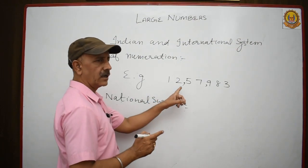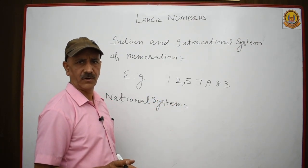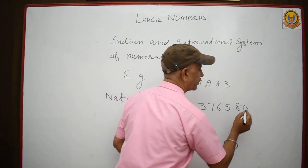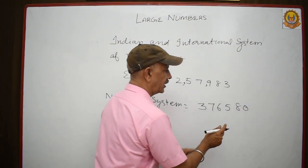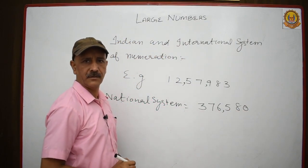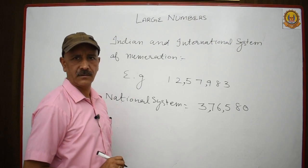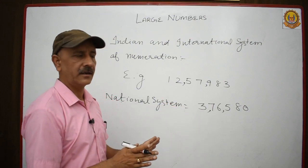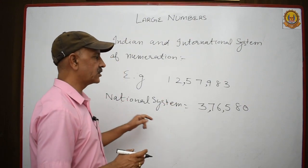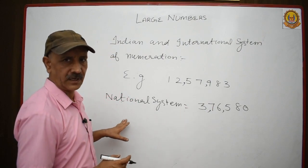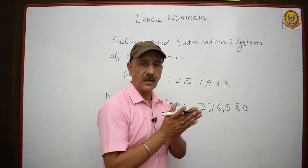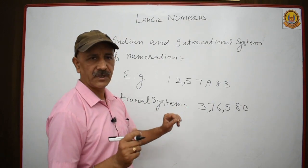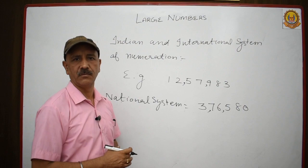Let me give you one more example. This is 3,76,580. First, put commas — one, two, three: put comma here. Then one, two: put comma here. This way is called the national way of numeration, or the national system of numeration. By this way, we present large numbers with the help of commas.